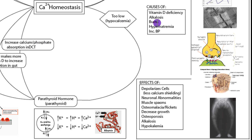Burns causing hypocalcemia is a bit counterintuitive, because cell damage leads to a release of potassium, which causes acidosis — and alkalosis is actually what usually causes hypocalcemia. However, there's lots of phosphate inside a normal cell, and when that cell is damaged, that phosphate is released. Calcium likes to bind phosphate, so that extra phosphate binds up calcium and causes hypocalcemia.